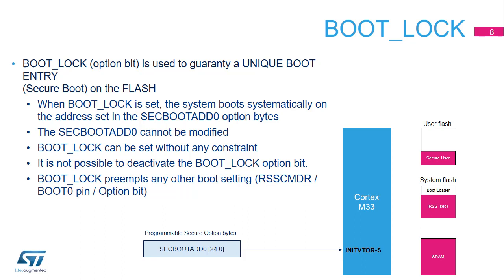Bootlock is an option bit that guarantees a unique boot entry when it is set. When bootlock is set, the system boots systematically on the address set in secure boot address 0 Option Bytes. This address cannot be modified. Bootlock can be set without any constraint, but it is not possible to deactivate the bootlock option bit. Bootlock has precedence over other boot configuration selection features: RSS-CMDR, boot 0 pin, and N boot 0 option bit.